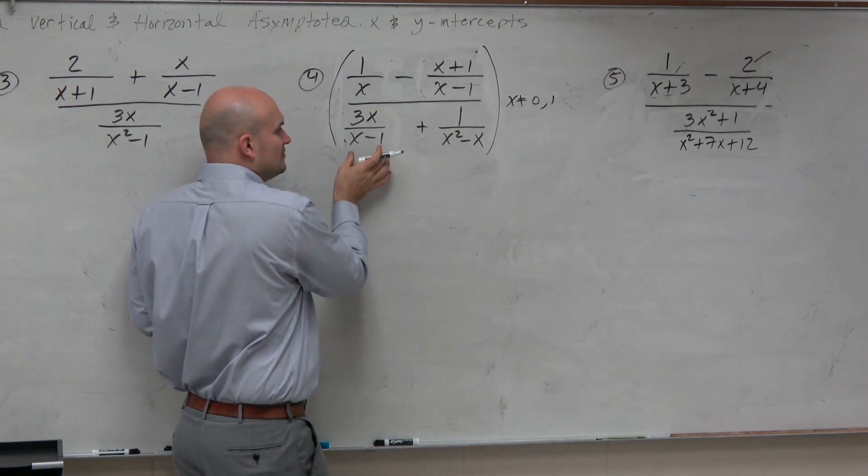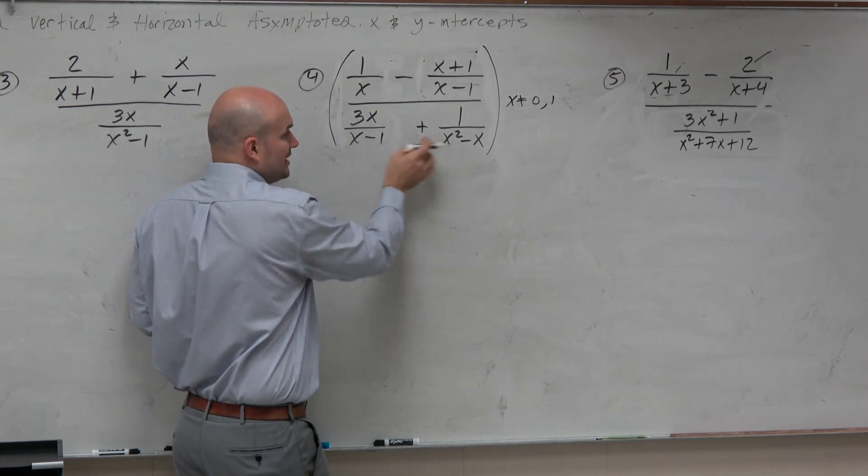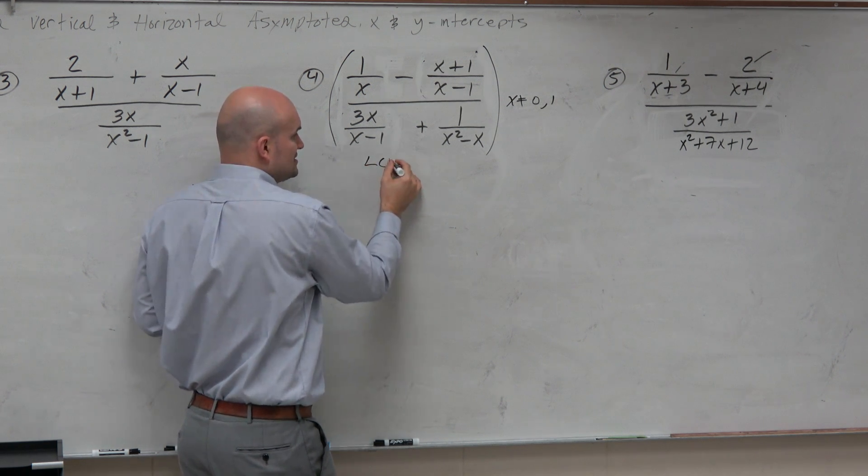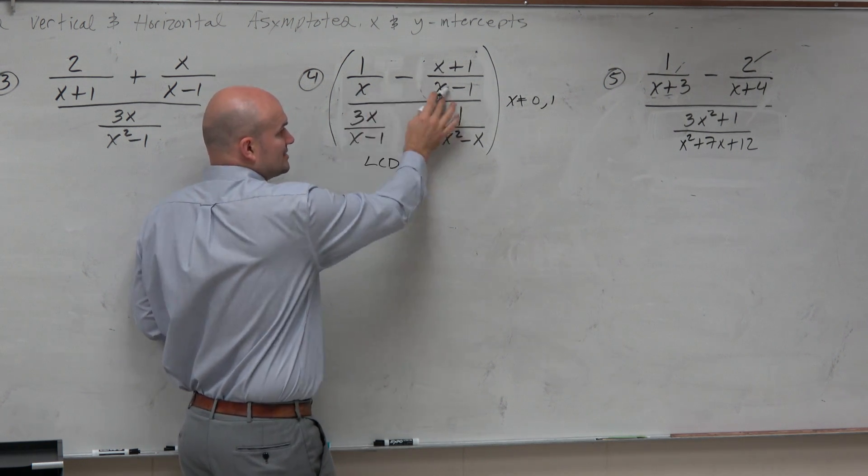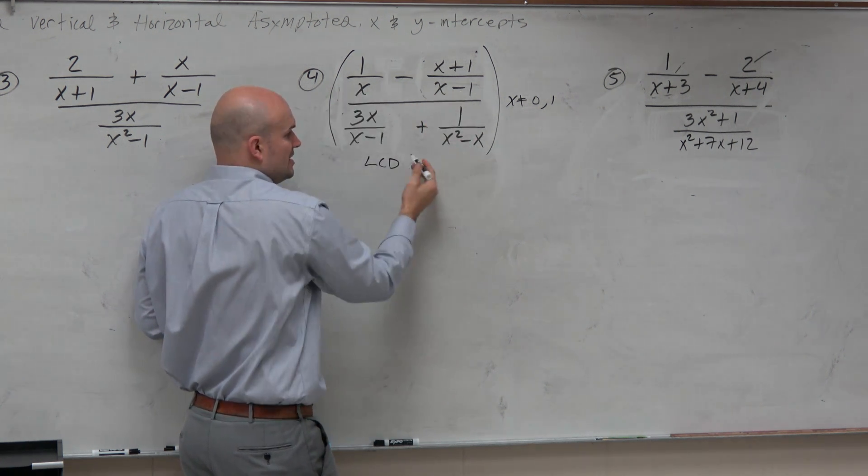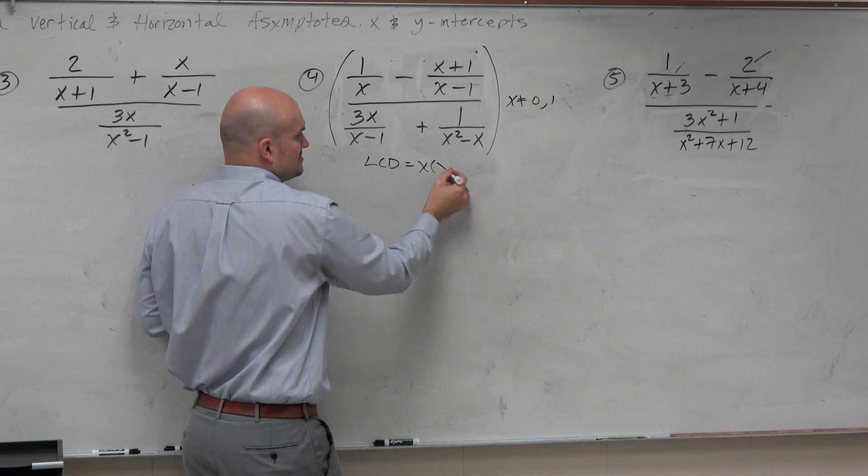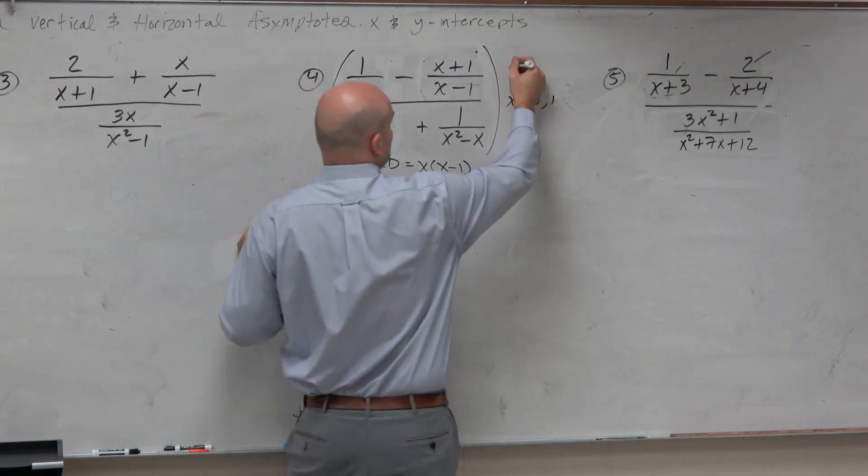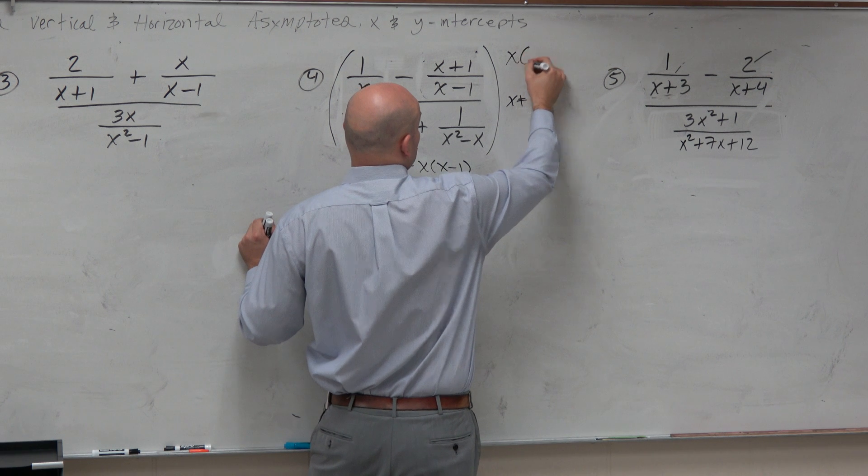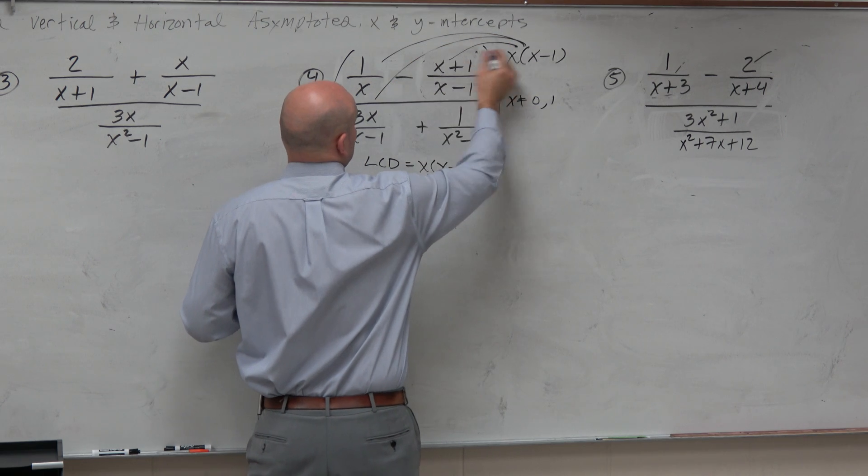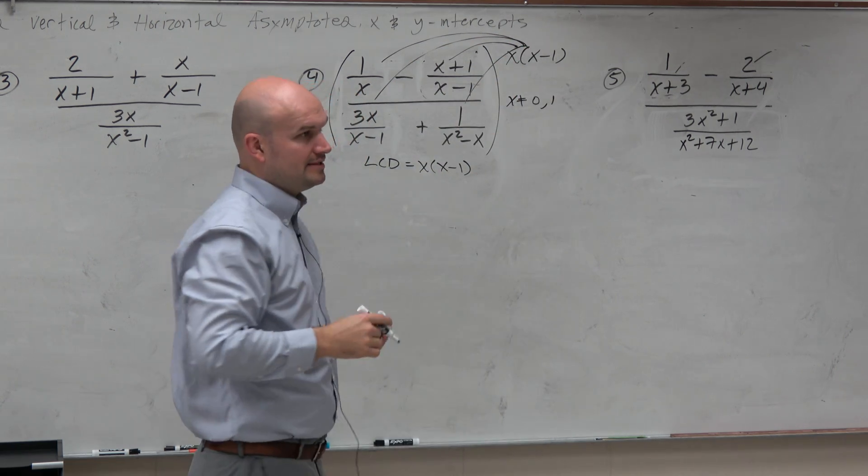That means the value that the common denominator of all of these denominators. And hopefully, you guys can see that the LCD is really just going to be the product of these two denominators. Because x times x minus 1 is this, right? So I'll say x times x minus 1. I'll write it out in the factored form. So what I'm going to do now is multiply everything times x minus 1. Everything.